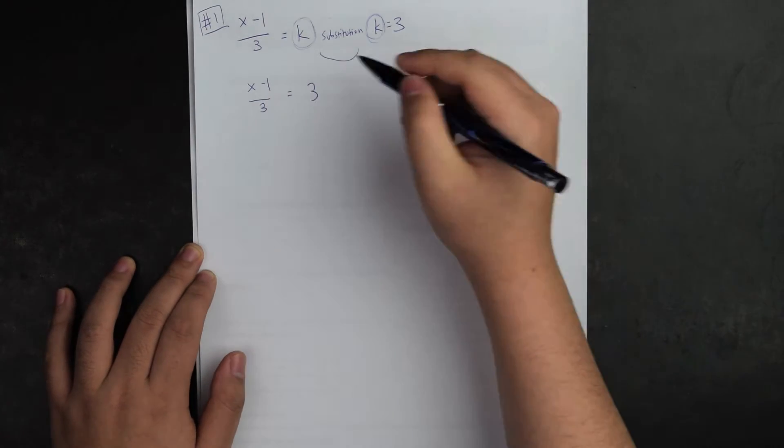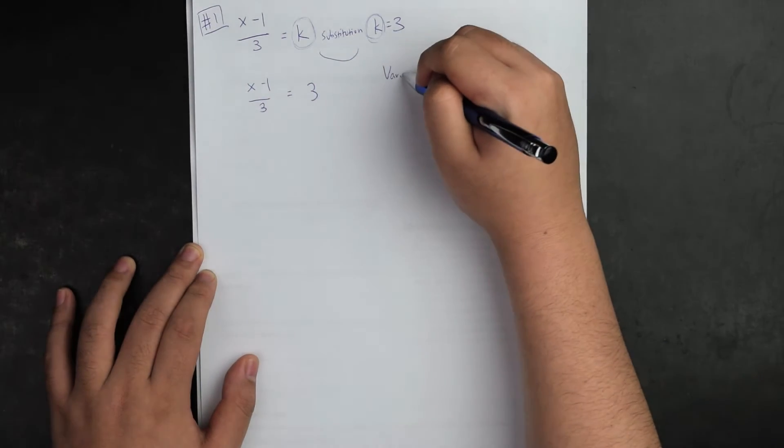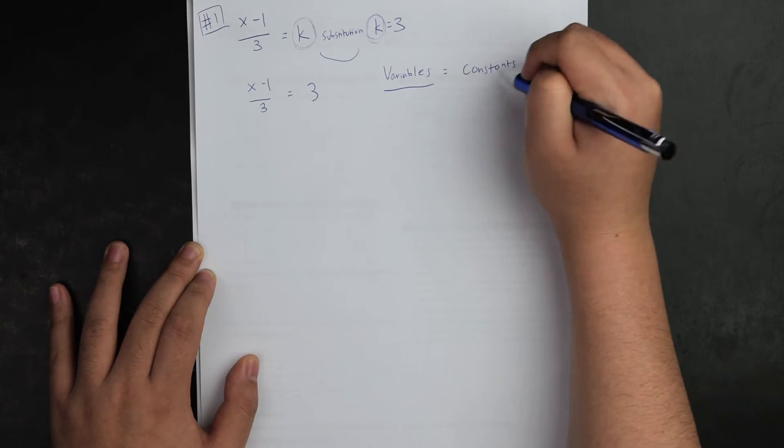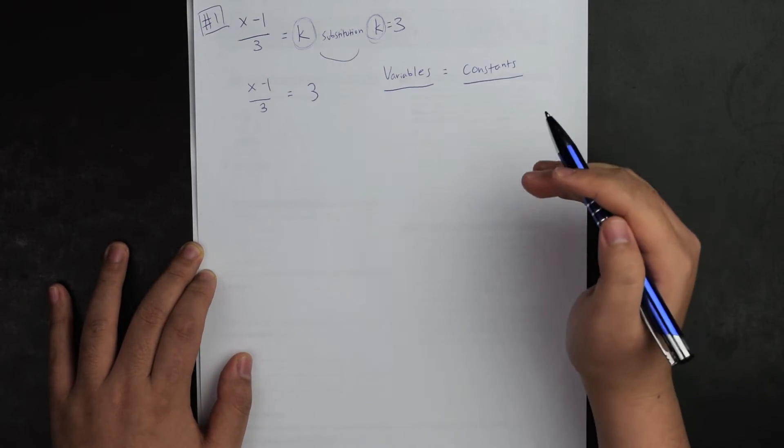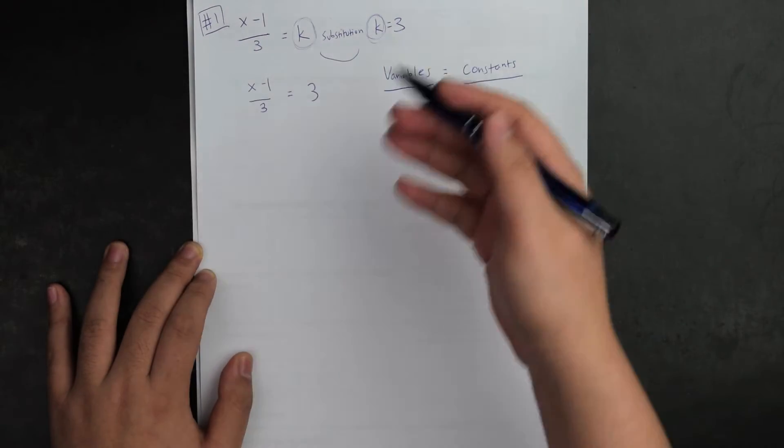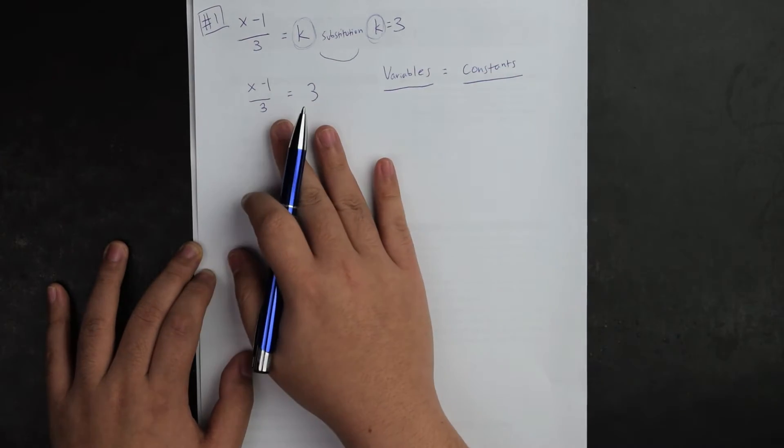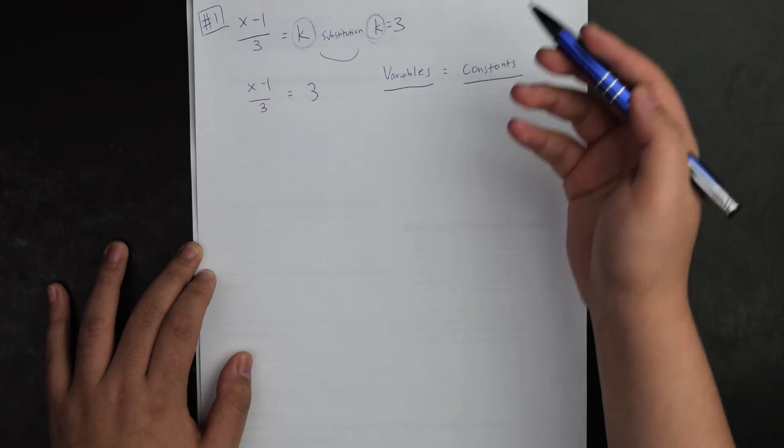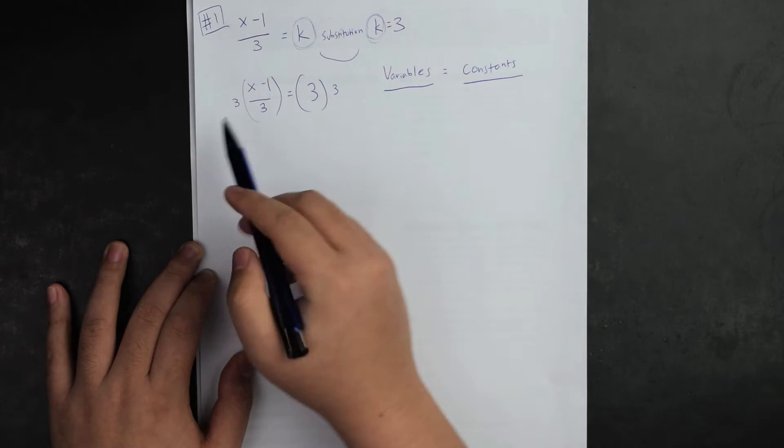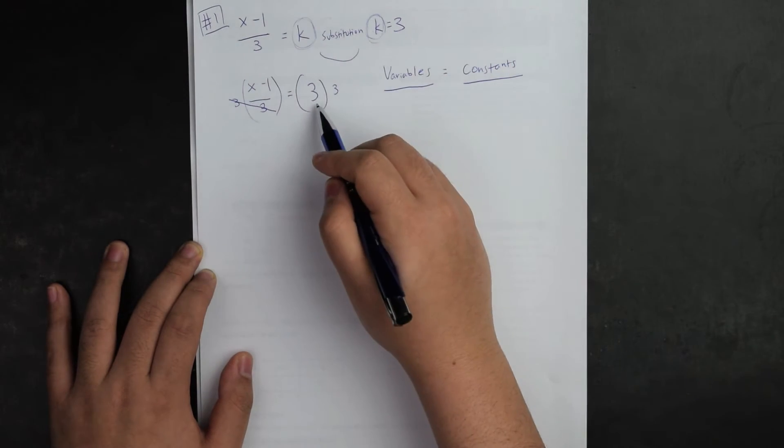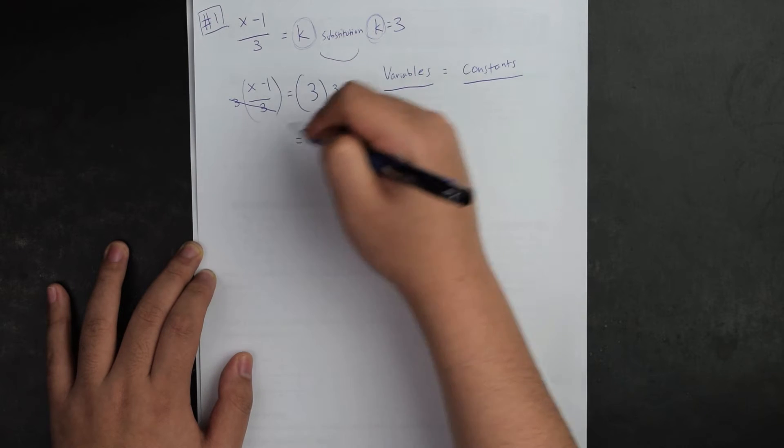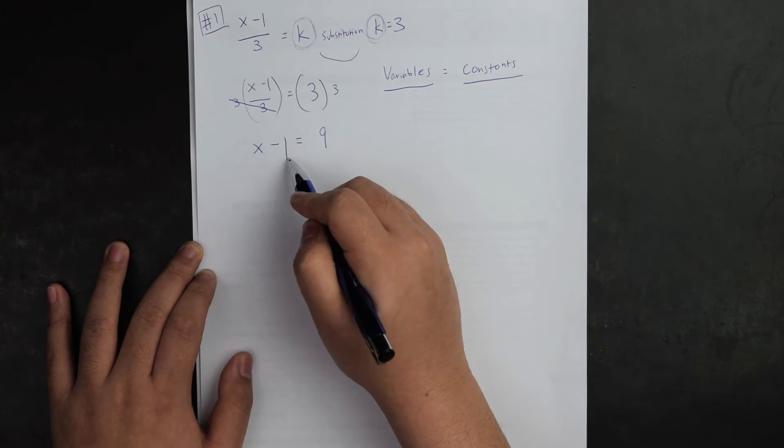My end goal is to have variables on one side completely, while constants on the other side. I need to get rid of fractions because I don't like fractions. I'm going to multiply three on each side. These three values cancel out, three times three is nine. I'm left with the equation x minus one equals nine.